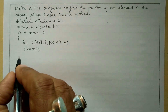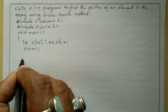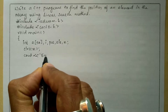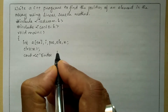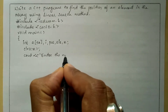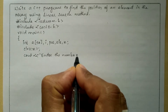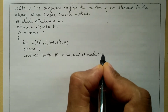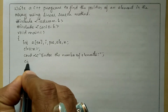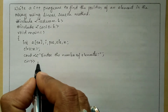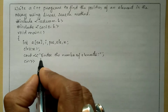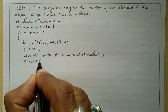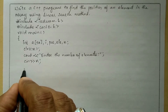Now we will ask the user how many elements. We write cout with stream insertion operator and in double quotation marks: 'Enter the number of elements', then semicolon. We are going to receive the response from the user through the keyboard using cin with stream extraction operator, and here we take the value of n.